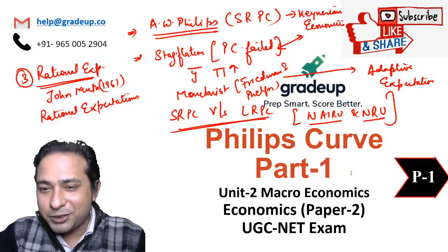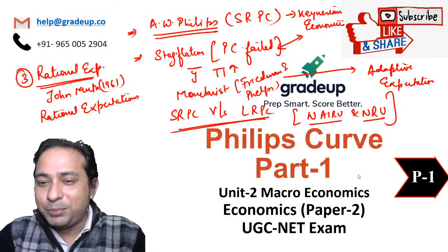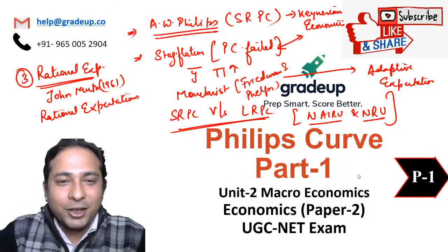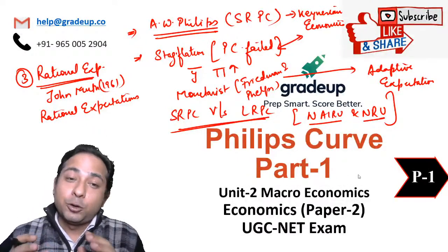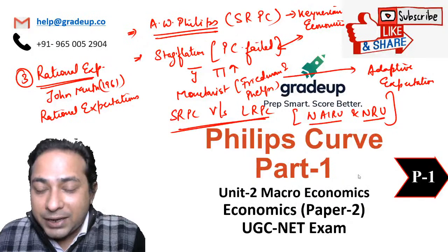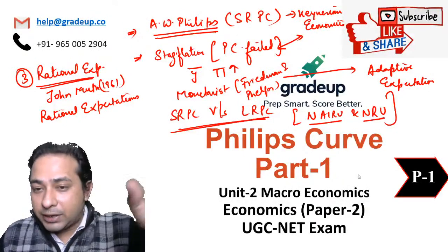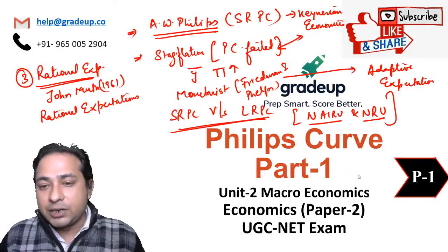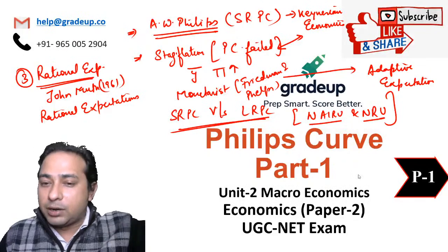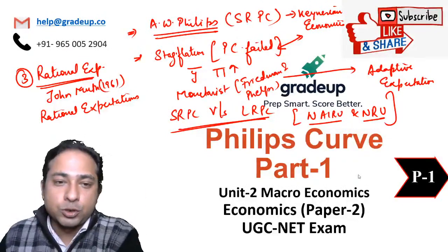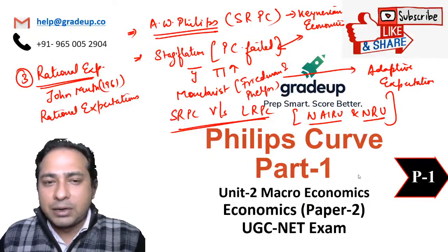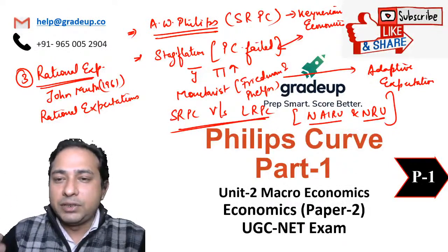Adaptive expectation occurs in the short run and rational expectation in the long run — that is partially right and partially wrong. How many of you already knew that there are three versions of the Phillips curve? So: the first is the AW Phillips curve based on Keynesian economics; the second is the Monetarist version; and the third is based on rational expectations — and in the rational expectations view, the Phillips curve doesn't hold even in the long run.